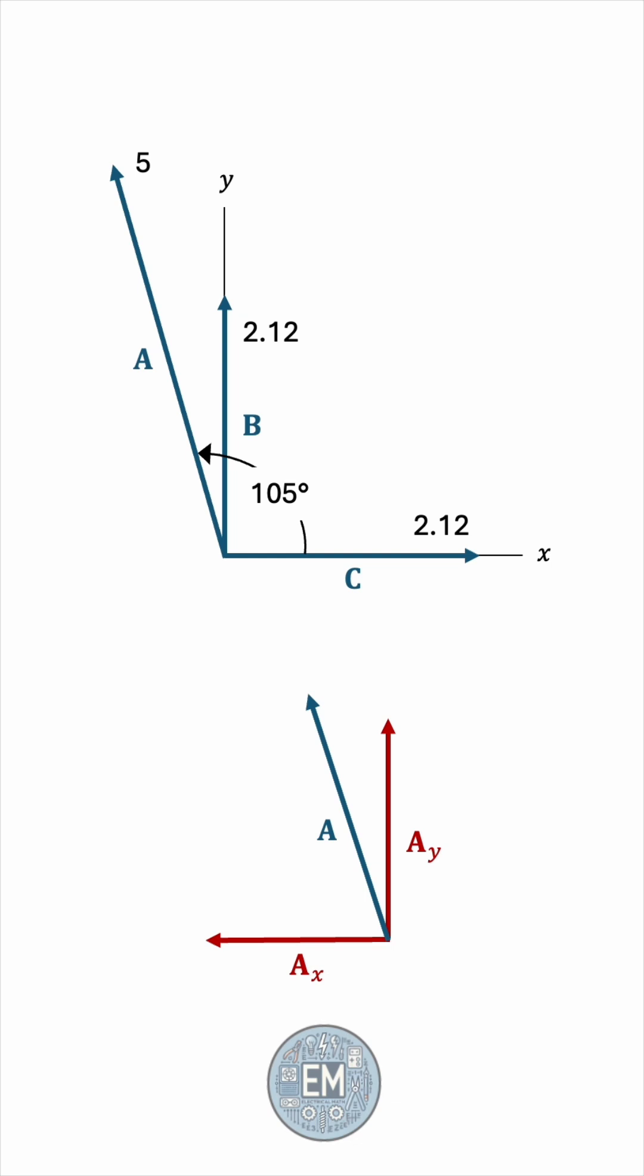To know which is which, you can always complete the right triangle, but the way I like to do it, and it's perhaps a memorized pattern, is if the angle is with the x-axis, then the x component will take the cosine. If the angle is with the y-axis, then the y component will take the cosine. In this case, the 105 degrees is with the x-axis. So it is the x component that will be 5 cosine the angle. The y component will be 5 sine the angle.